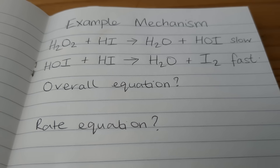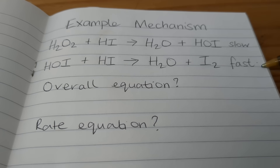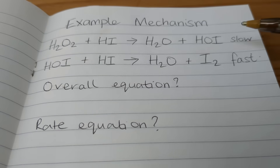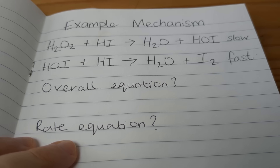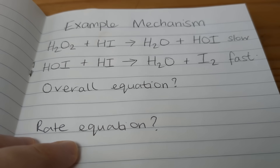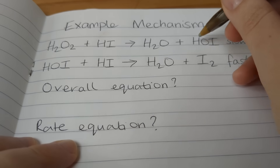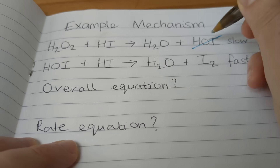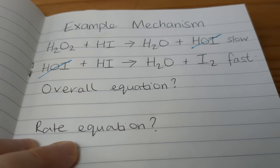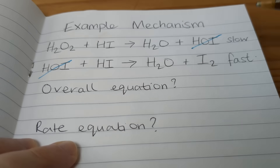Here we have an example two-step mechanism. The first step is the slow step — the rate determining step — and the second step is a fast step. The overall equation is just the two steps added together with any intermediates or catalysts cancelled out. An intermediate is something formed in one step and consumed in a following step. We can see that HOI is formed in one step and used up in the next — that is an intermediate.